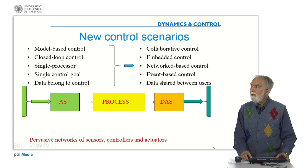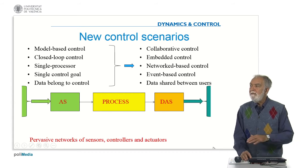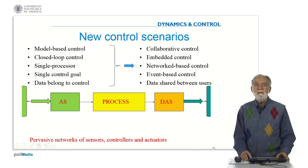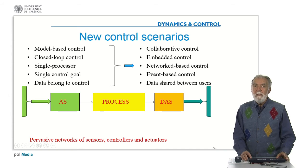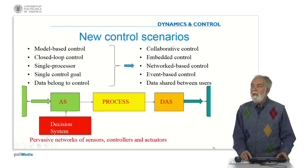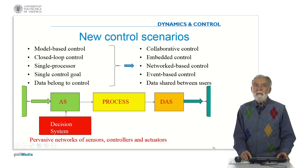That means the single controller will disappear and instead we will have a pervasive network of sensors, controllers, and actuators connected not just to one process but to many processes. It will be a decision system that selects which action is most appropriate to the process at any time instant.